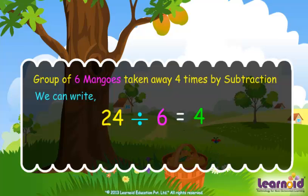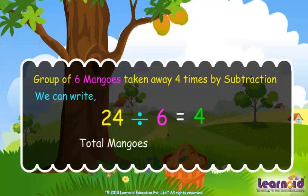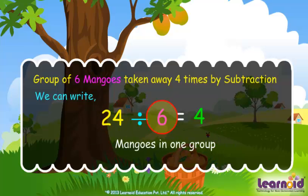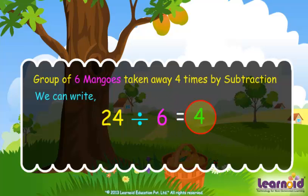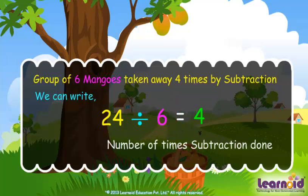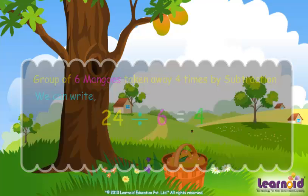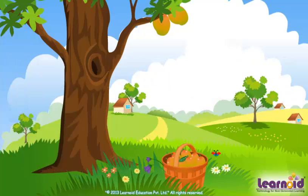We can write 24 divided by six is four. 24 is the total number of mangoes. Six is the number of mangoes in one group. Four is the number of times subtraction was done. Let's see one more example.